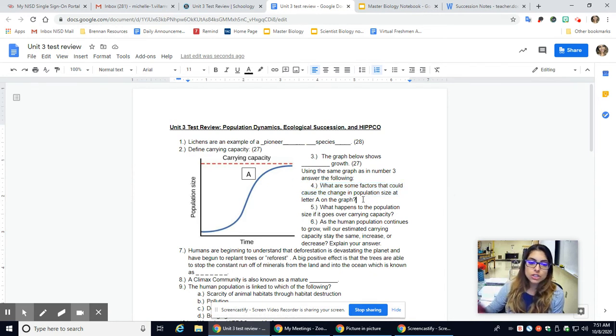Number four, what are some factors that could cause the change in population size at letter A on the graph? So factors such as what we had discussed yesterday in Kaibab lab, where we mentioned a factor is anything that's going to cause a shift or a change in your population. Predators, right? If I have a growing number of predators, then my population is going to decrease. If I don't have a lot of predators, my population can increase. If I'm running out of food, that's a problem. If I'm experiencing higher death rate than birth rate, that's a problem, too. So all of these are factors that can change a population.